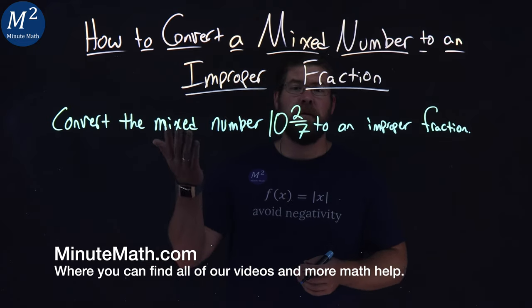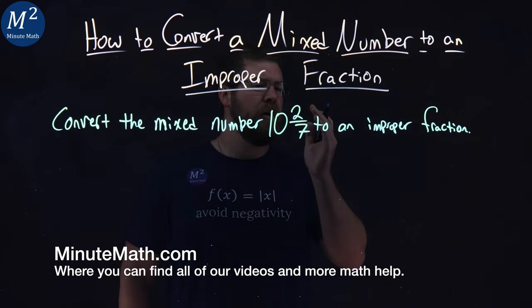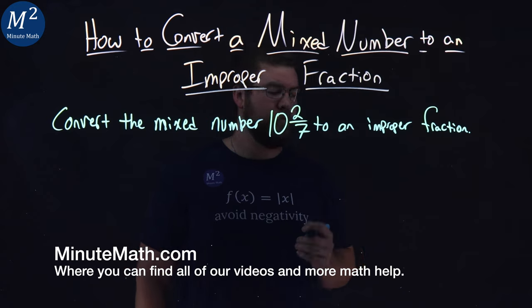We're given this problem here. Convert the mixed number 10 and 2 sevenths to an improper fraction.